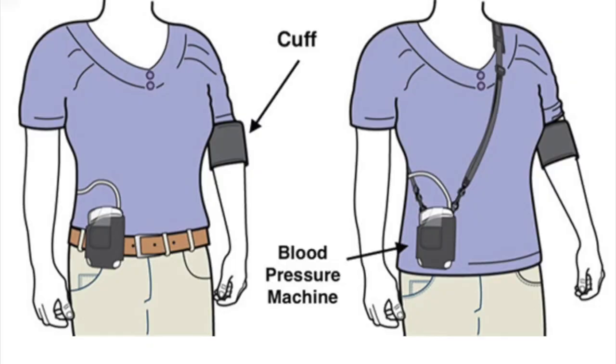In order to recognize these patterns, ambulatory blood pressure monitoring is important. A BP cuff is attached to your arm and a small device is given to you. That device is programmed to measure your blood pressure at specific intervals — say every 20 minutes, 30 minutes, or 1 hour — during your routine activities: working in your office, climbing stairs, eating, or sleeping.